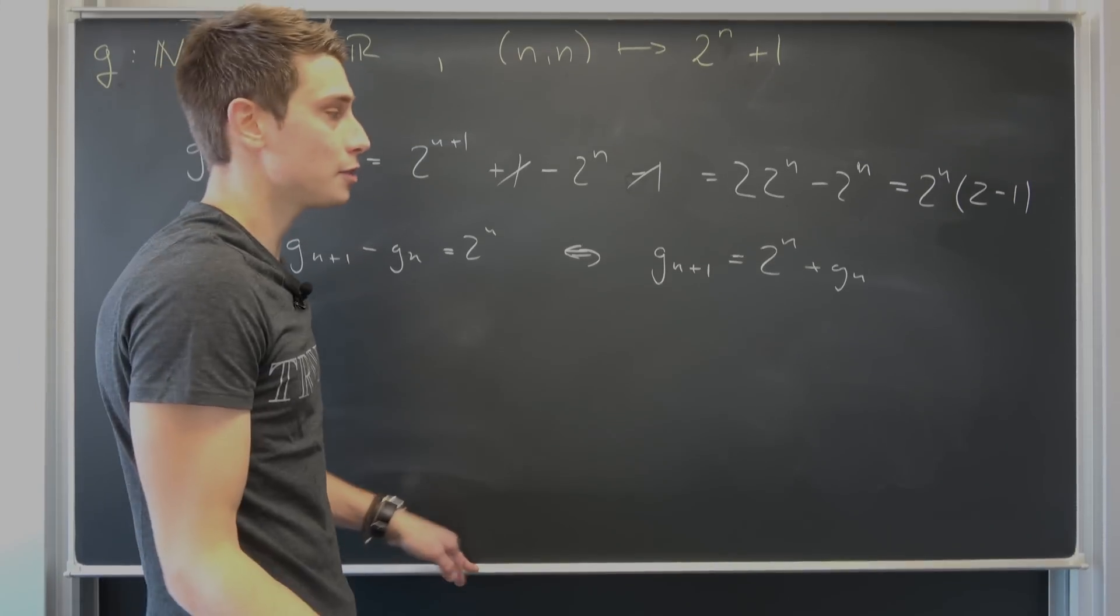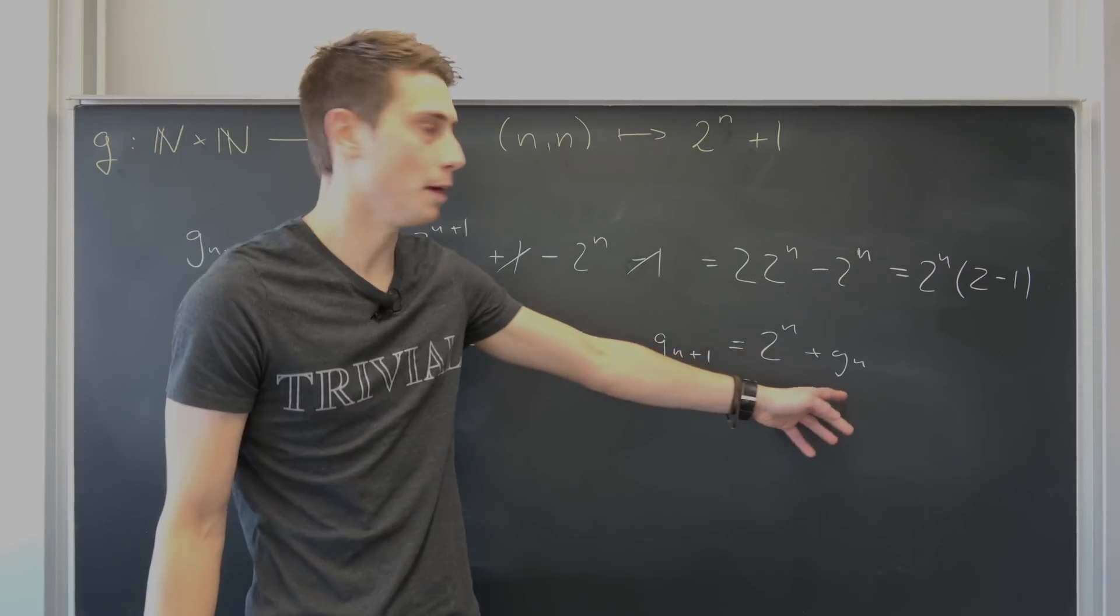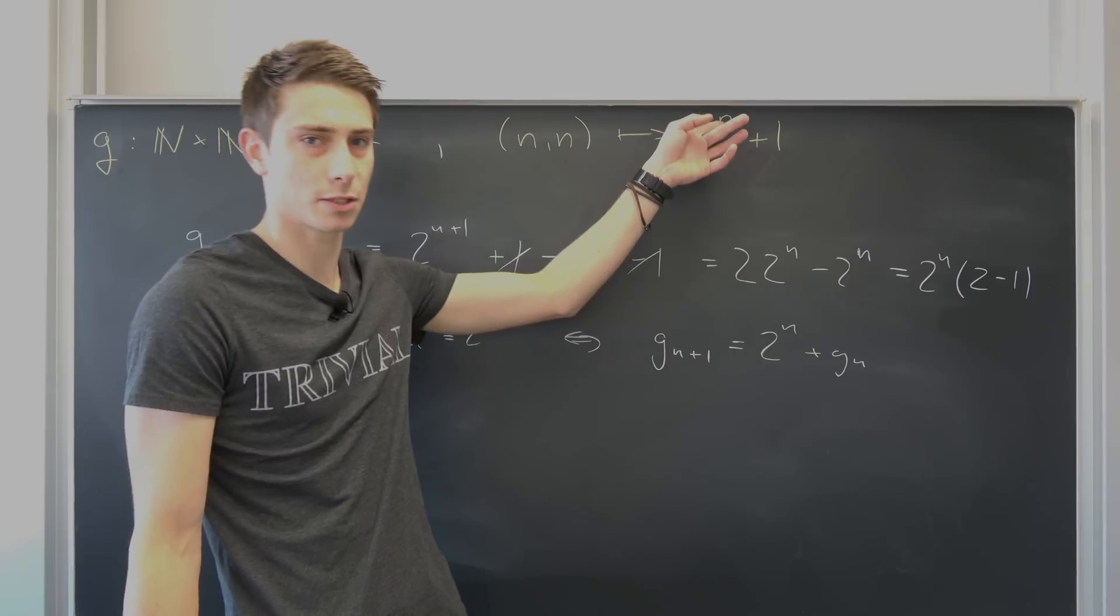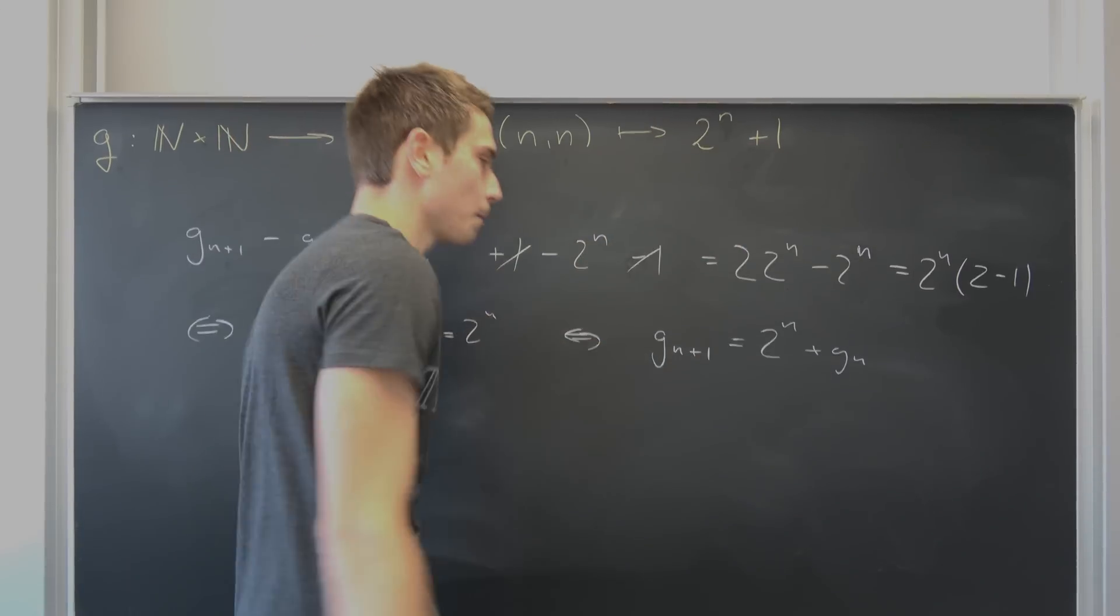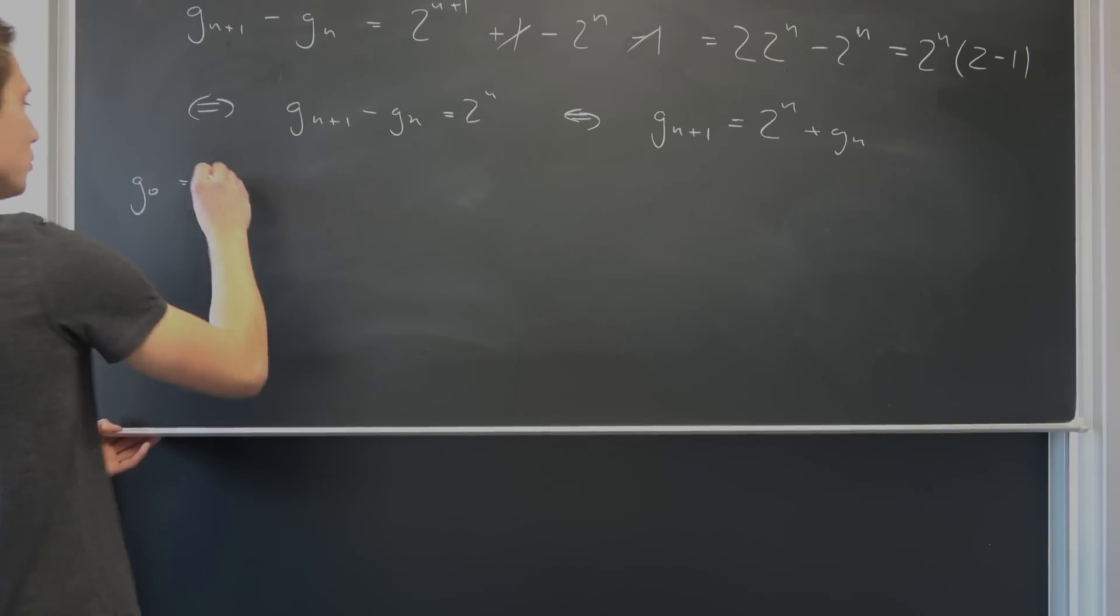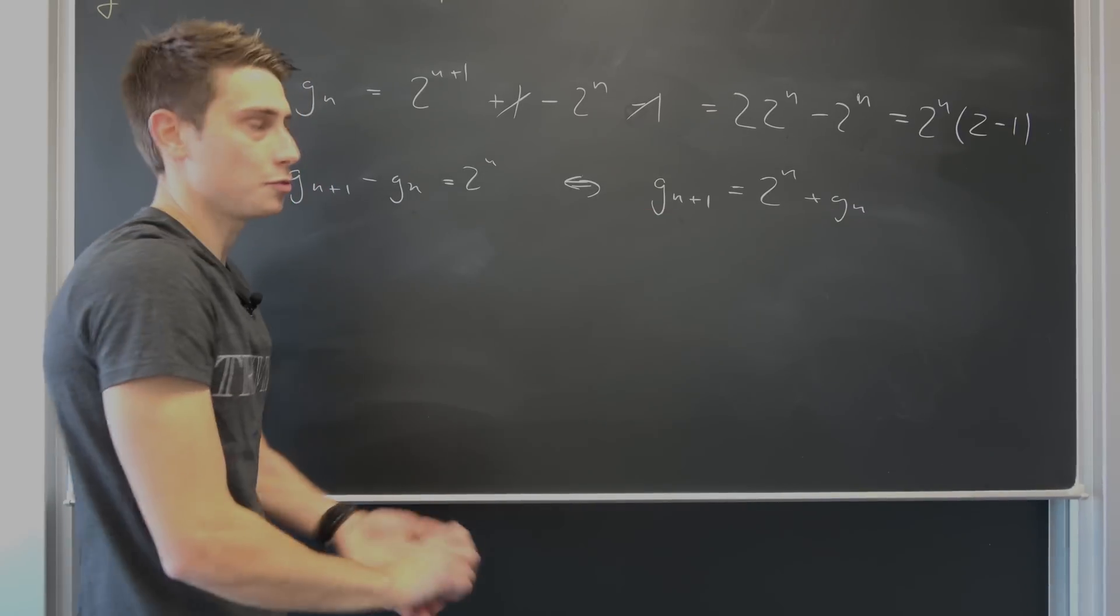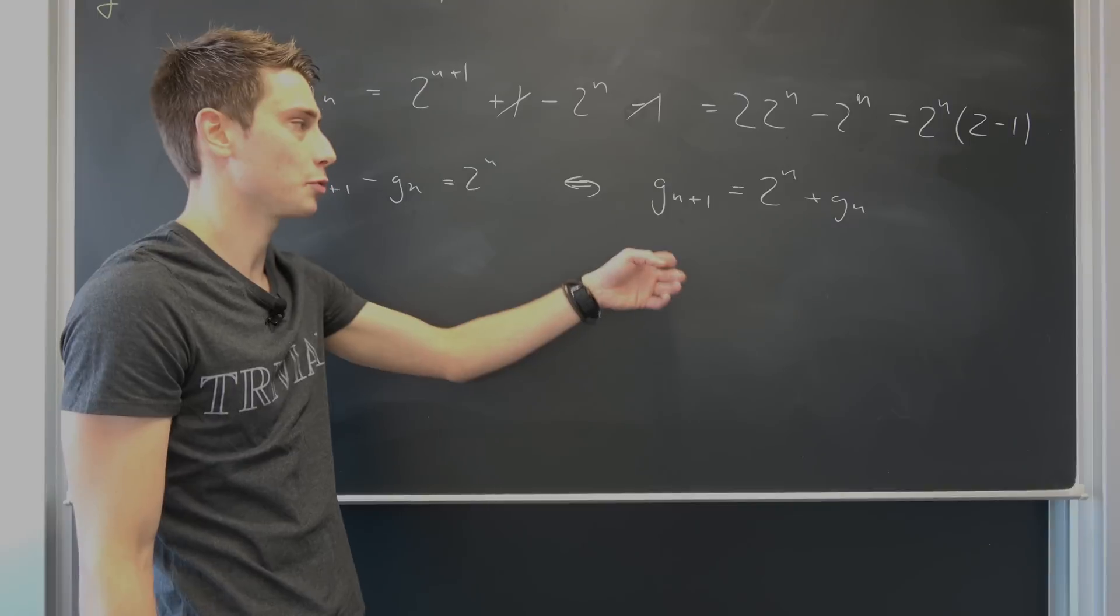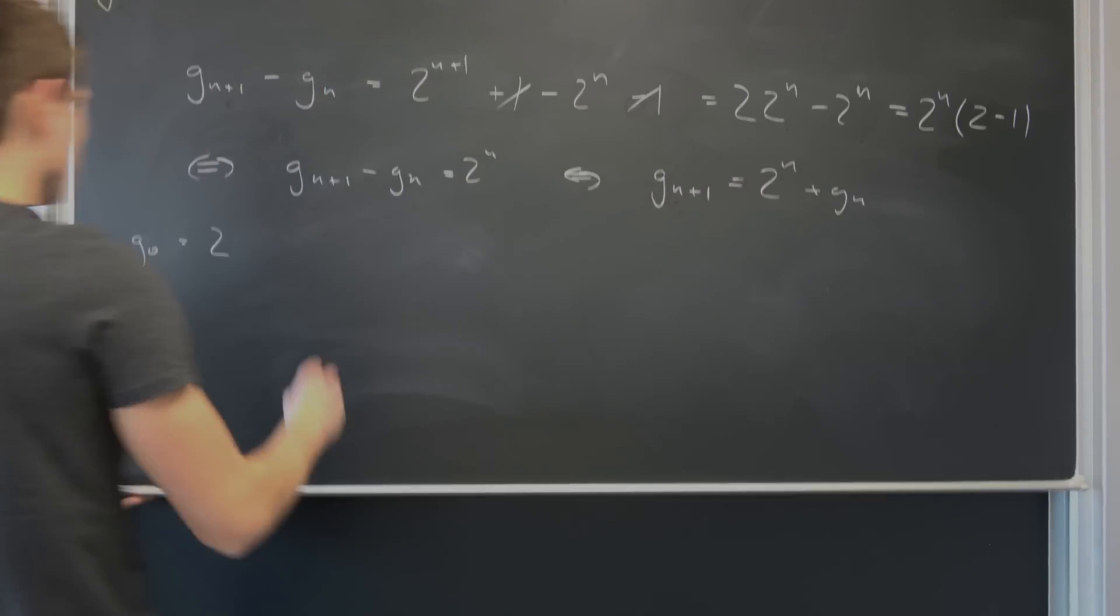And why not add g_n on both sides? That's equivalent to saying g_{n+1} is nothing but 2^n plus g_n. And this is already quite good. Now you can make an initial value problem out of this because, for example, if you take the zeroth member g_0, this is nothing but 2^0, which is 1 plus 1, so this is 2.